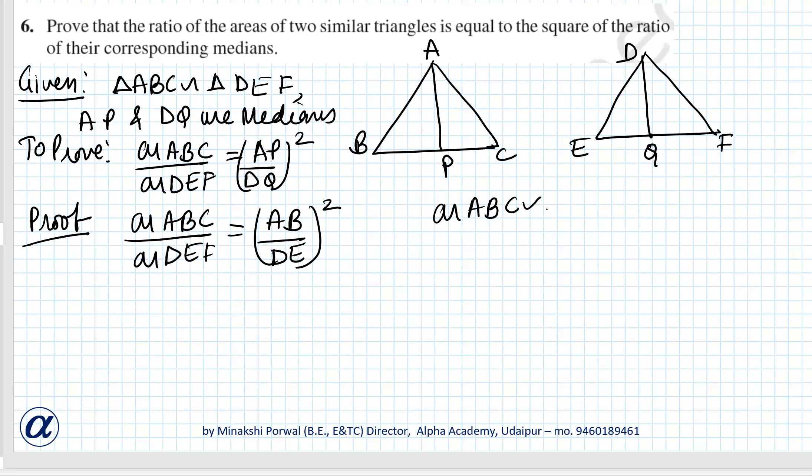Triangle ABC is similar to triangle DEF, which means the sides are proportional: AB upon DE equals BC upon EF equals AC upon DF.